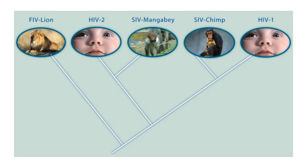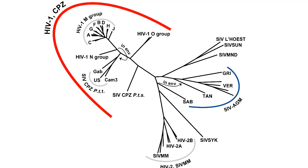HIV-2, for the most part, is confined to Africa. It has a very similar but not identical gene structure and life cycle. Among HIV-1, there is a division called groups. Group M, which stands for major, represents 90% of all HIV infections globally.